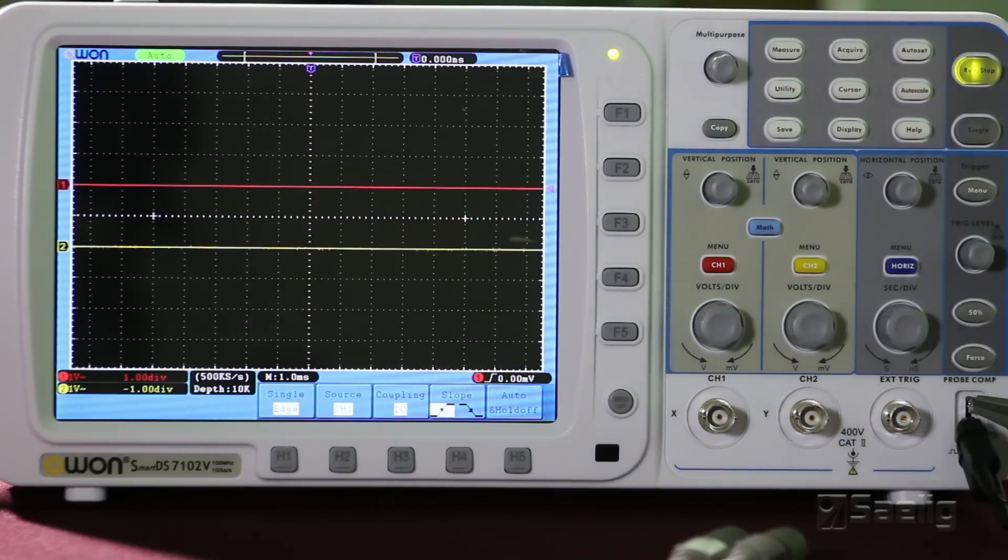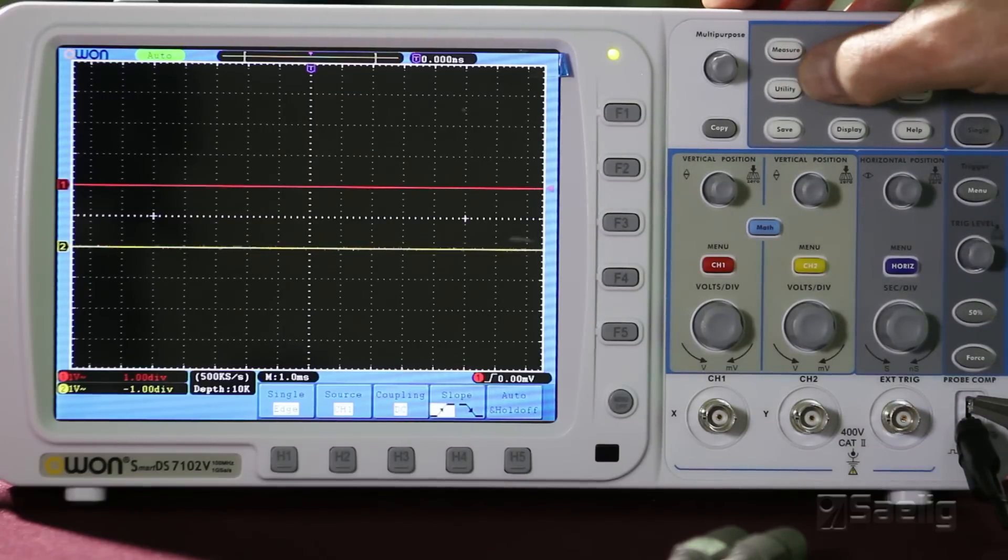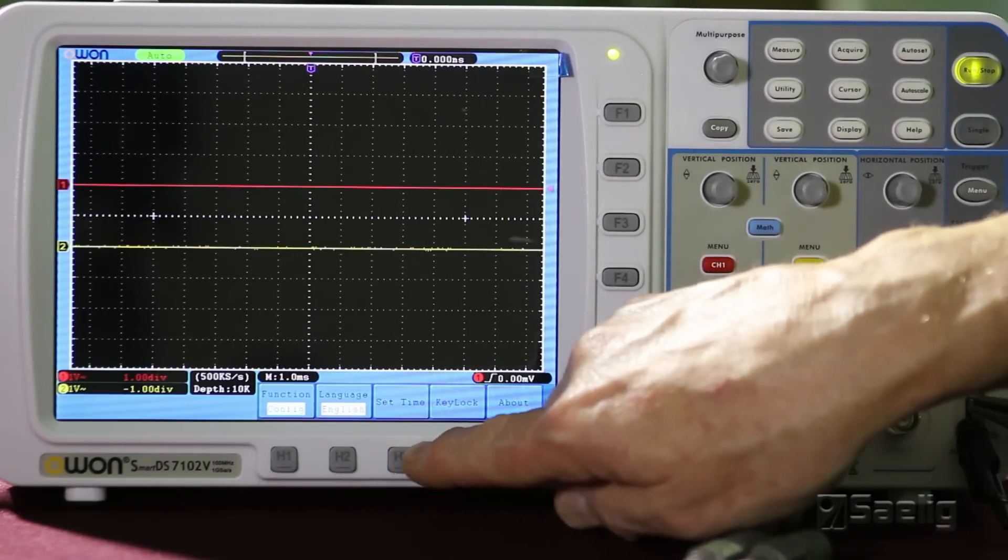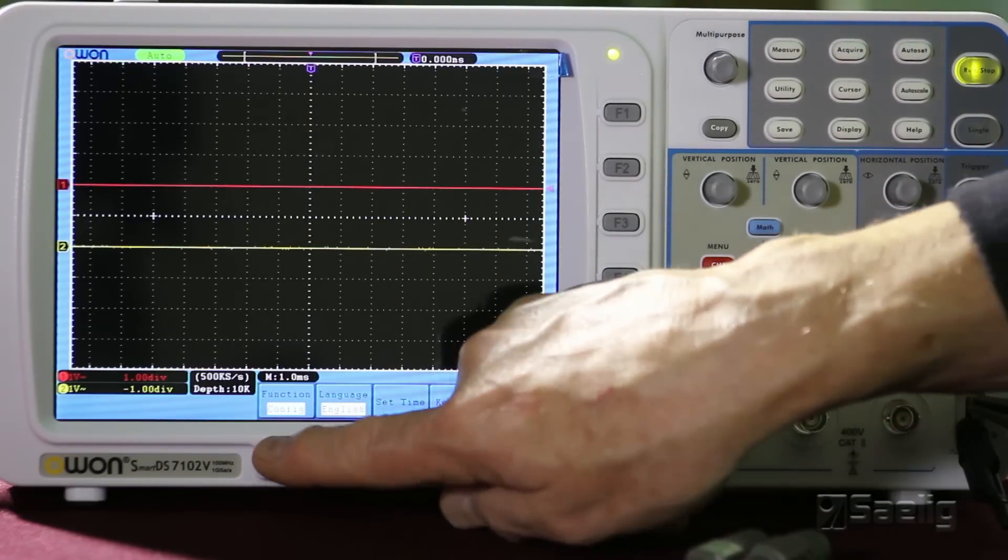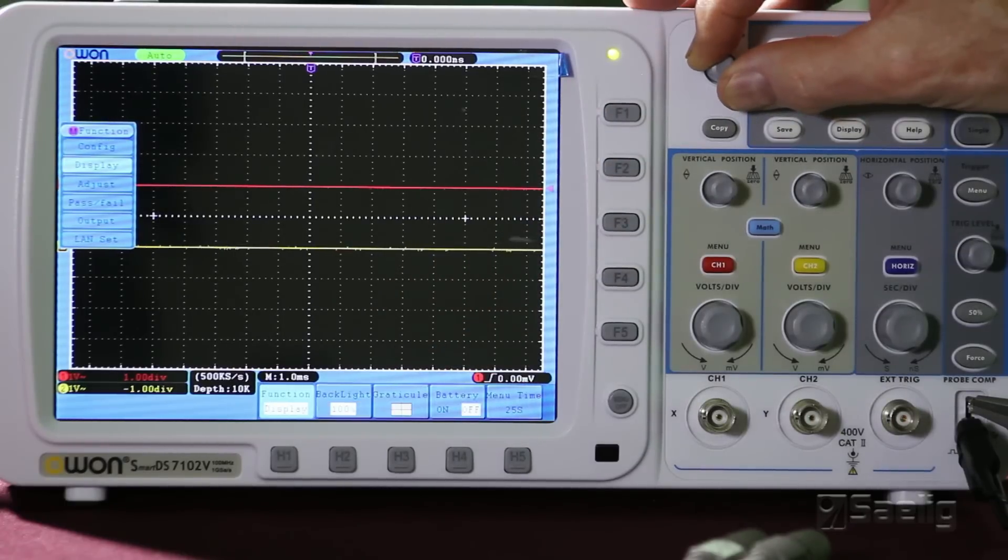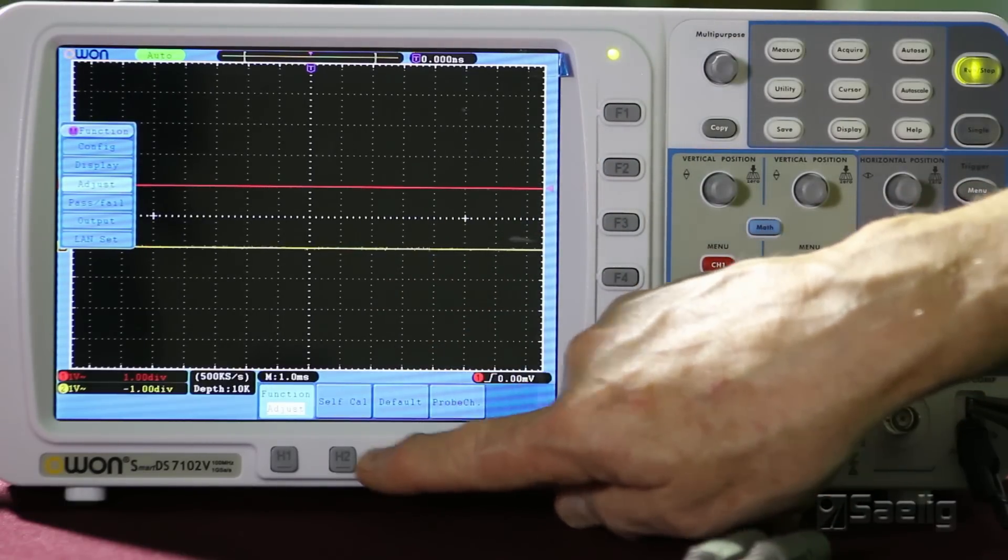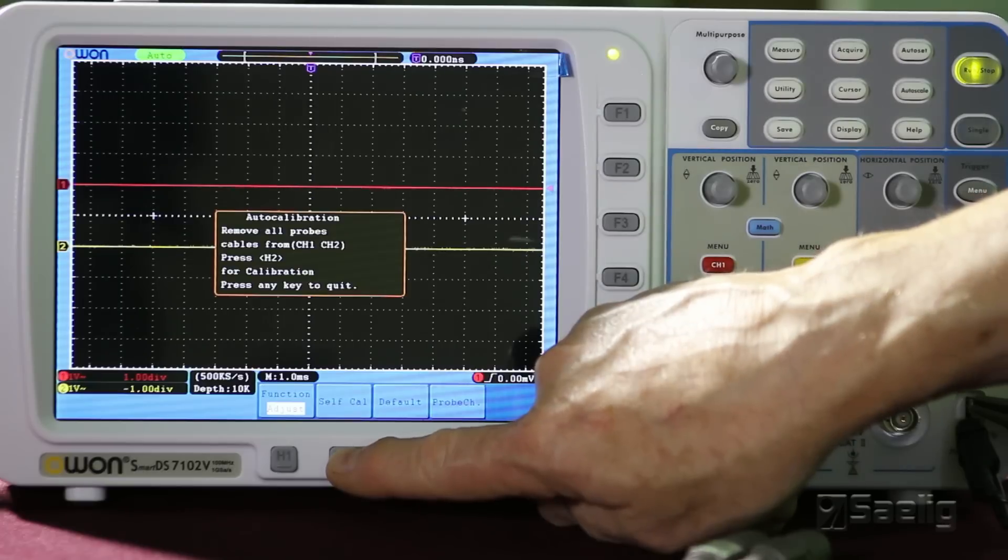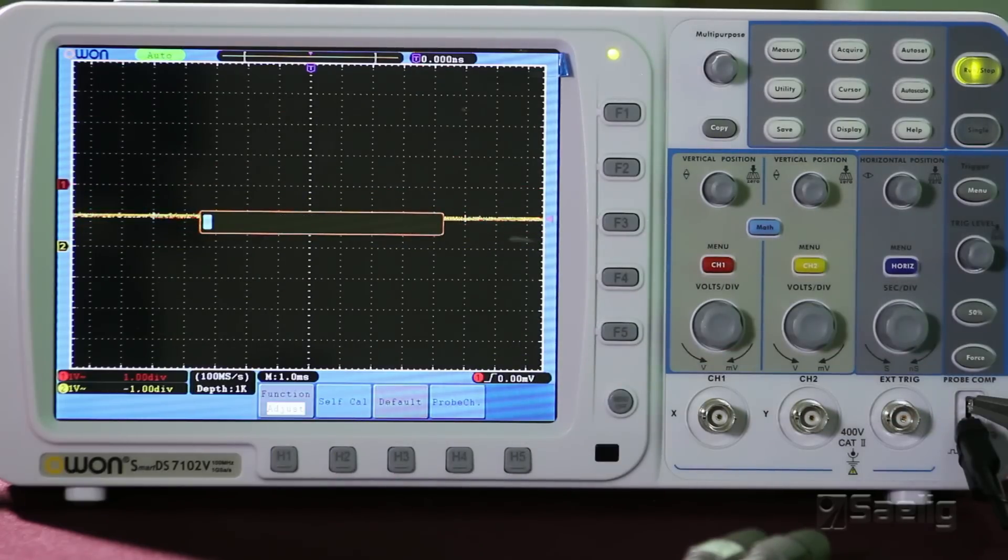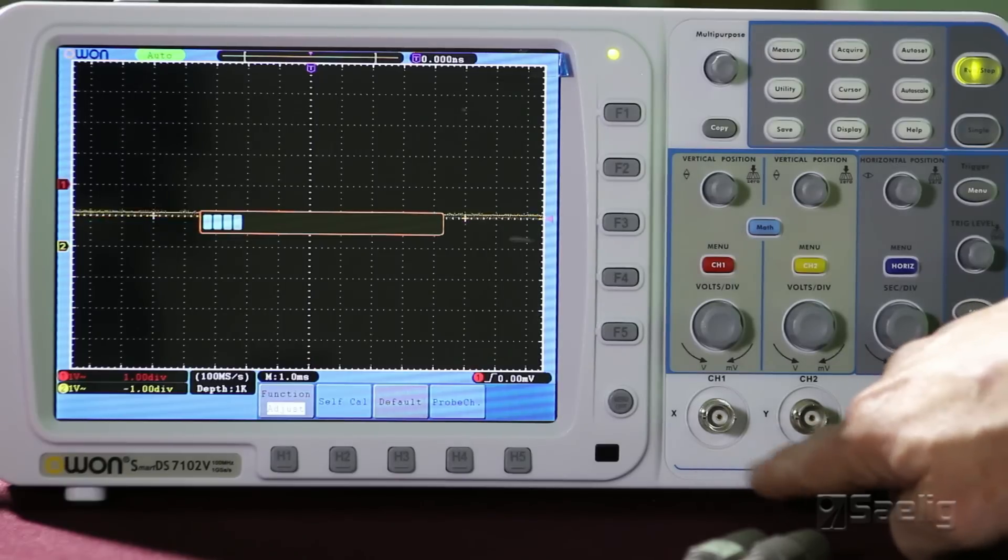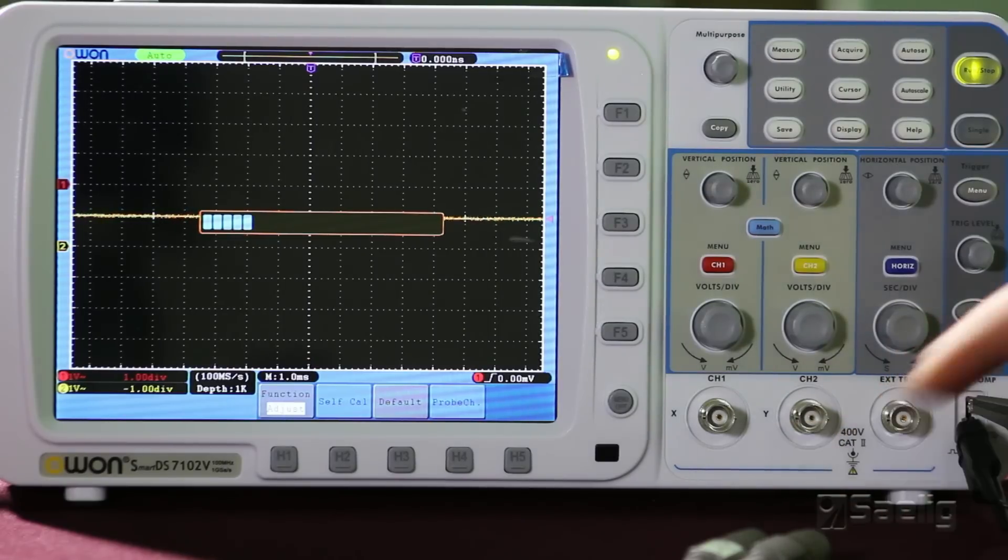So, anyway, the next thing to do is to make sure that the scope can pass its own self-calibration program. And again, that's underneath the utility key. So we're going to just find it real fast here because we ended up setting factory defaults. Here it is here, self-cal. And, of course, when you do this, you don't want to have anything attached to the channel one, channel two front end inputs right there.